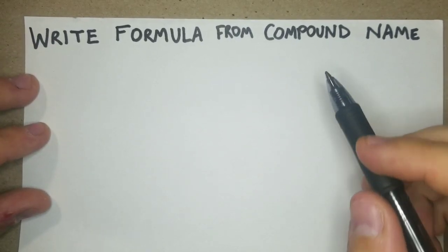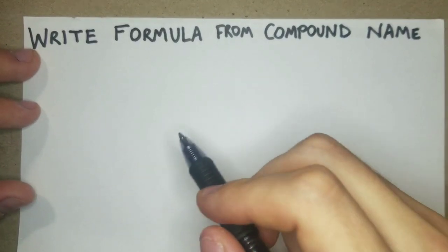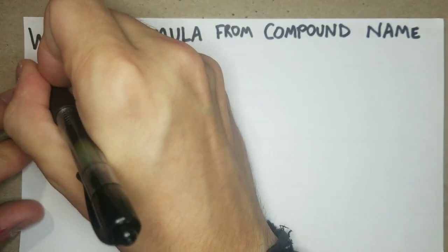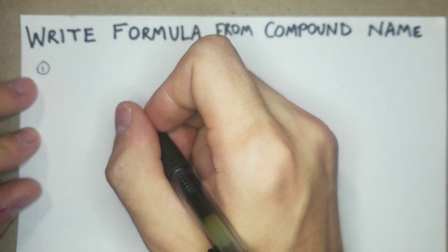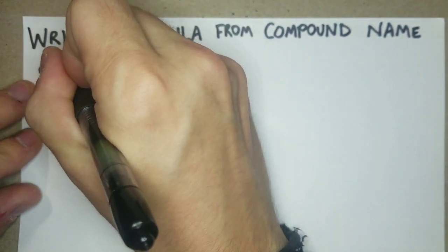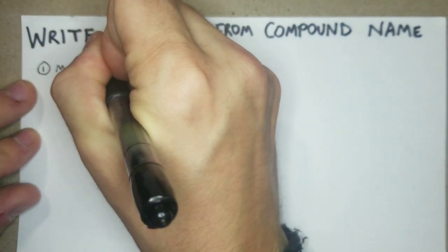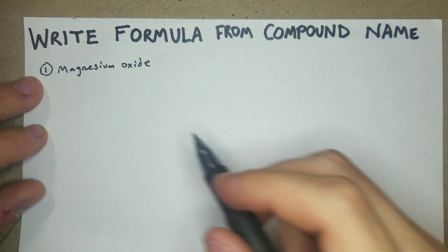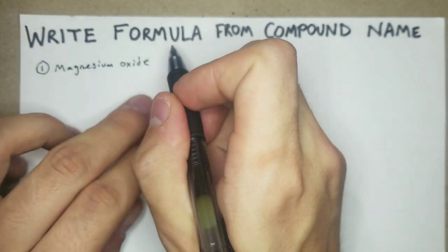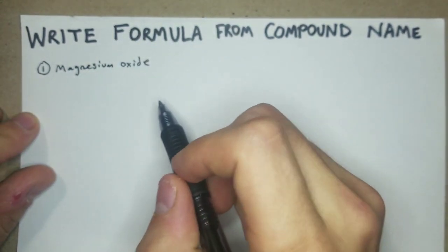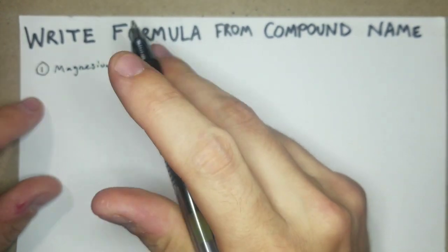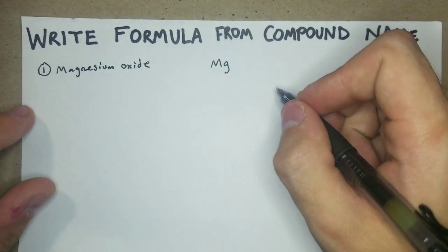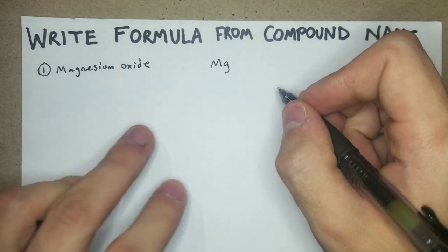We're going to go over how to write the formula for a compound when you only have the name. Starting with magnesium oxide — if you watched the previous video, you probably remember the '-ide' ending is added whenever it's just two elements, a cation and an anion. So we'll start off with Mg.